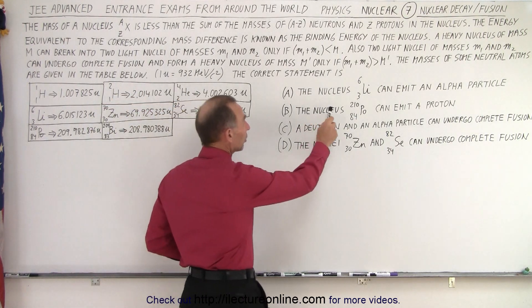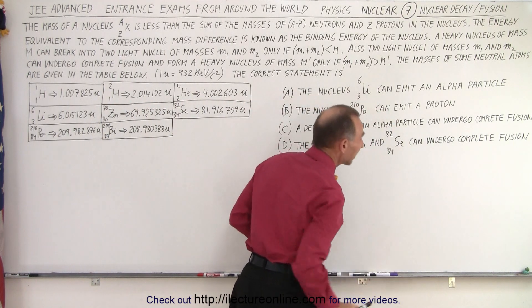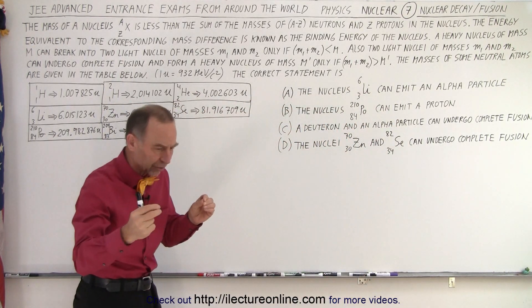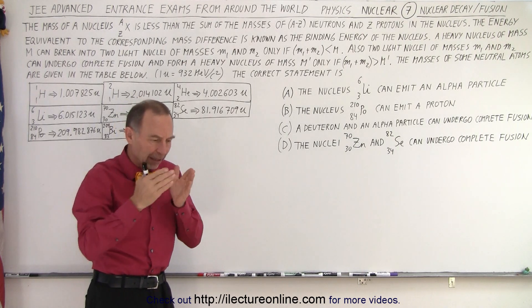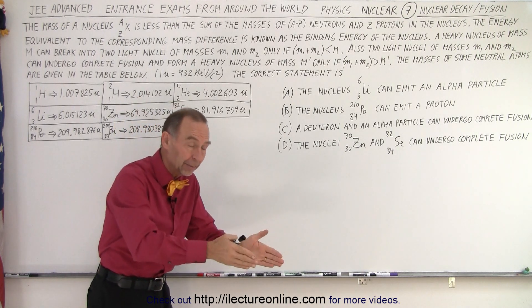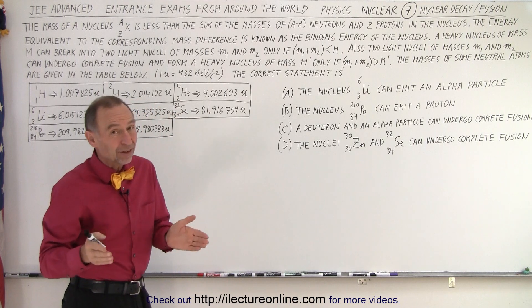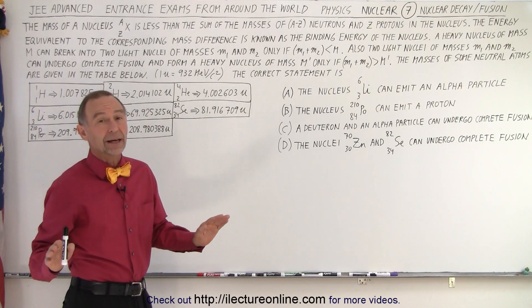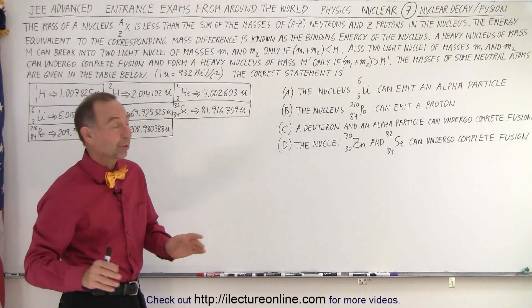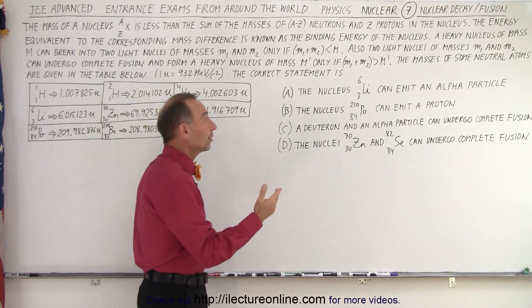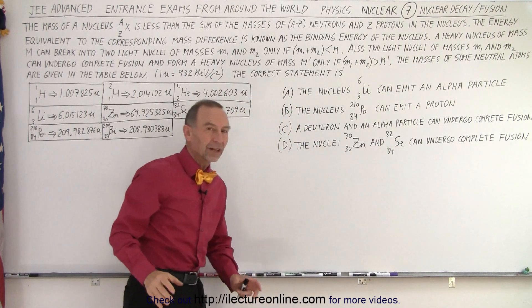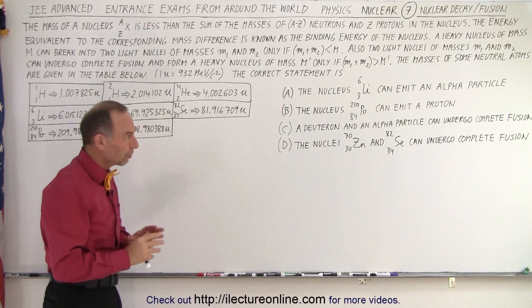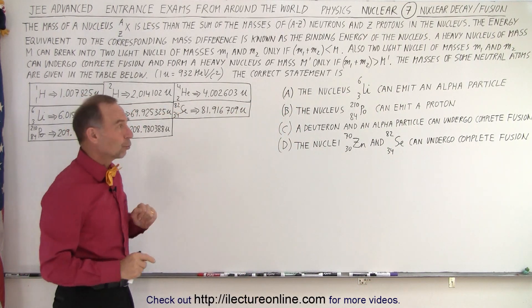All right, the first one says that the nucleus lithium-3-6 can emit an alpha particle. So when an alpha particle is emitted, that's essentially a fission reaction, that things are splitting up into lighter elements. Now, for any elements that are lighter than iron, that's extremely unlikely. Matter of fact, not possible. So right off the bat, you don't expect to see any sort of emission of alpha particles from elements that are lighter than iron. So for that alone, I would say A is wrong.